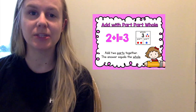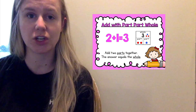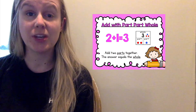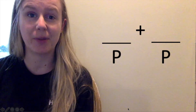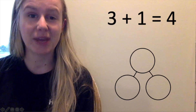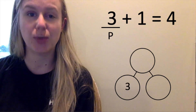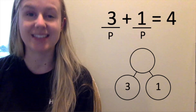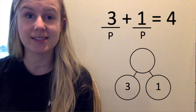Add with part-part-whole helps us create a number bond to keep track of the parts and the whole in our addition equations. For addition, we know that Gus the Plus puts parts together. So the numbers around Gus the Plus are the numbers that are our parts. Let's practice with a couple of examples. Three plus one equals four.